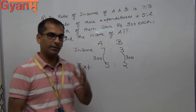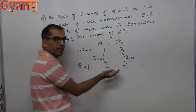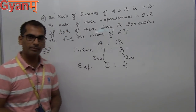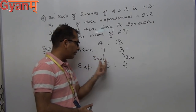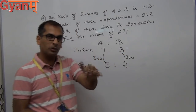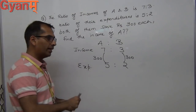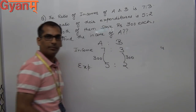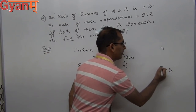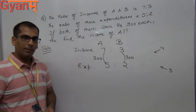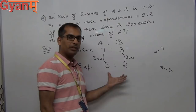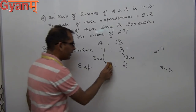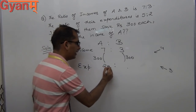Since savings are equal, the difference of income and expenditure must also be equal. The difference between 7 and 5 is 2, and the difference between 3 and 2 is 1 — these are not equal, so we make them equal using cross-multiplication. The difference between 7 and 3 is 4, and between 5 and 2 is 3. We multiply the income ratio terms by 3 and the expenditure ratio terms by 4 to get new ratios.